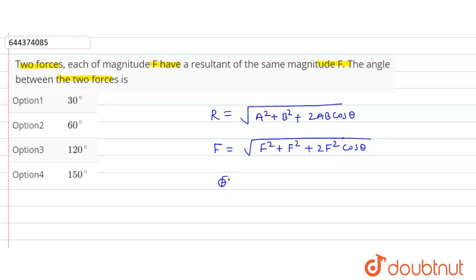Now square both sides, so F² = 2F² + 2F² cos θ.